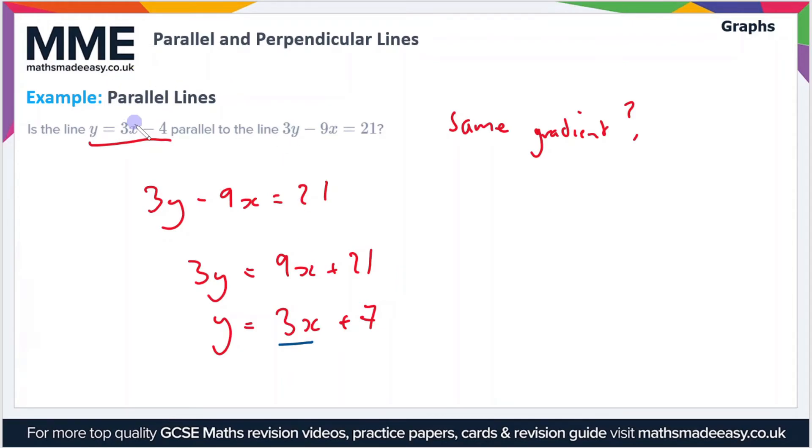Now as you can see, this has a gradient of 3, and the other line given in the question also has a gradient of 3, so yes, the lines are parallel.